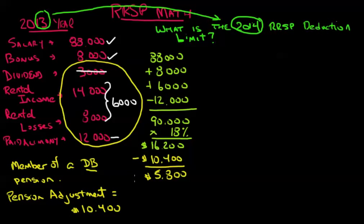So in fact, that $10,400 pension adjustment knocks down this person's RRSP room and this person will now have $5,800. And if we have this information available, this is now the right answer. $5,800 is the right answer to this question.